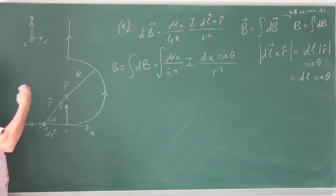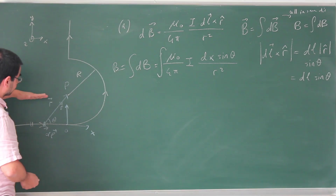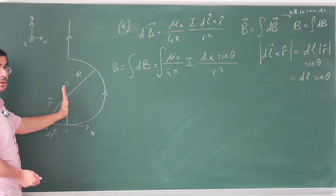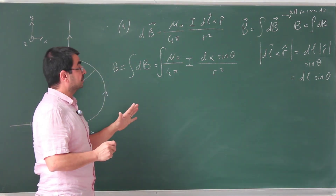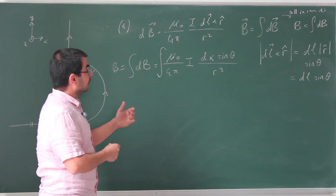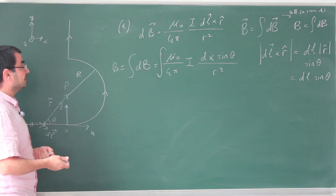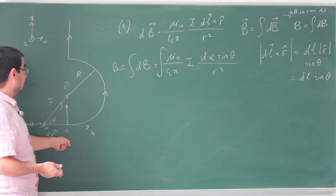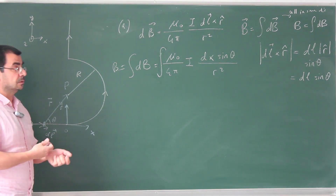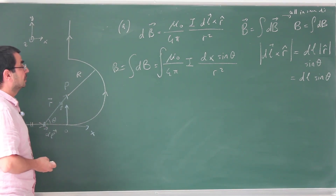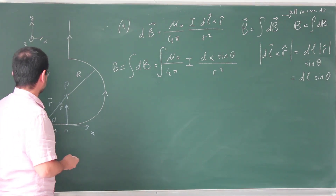There are two choices: either express everything in terms of theta — starting at theta equals 0 and going to theta equals pi over 2 — or express everything in terms of x. In the book, the theta approach was always used because the integral is easier to take. Expressing in terms of x is conceptually simpler but gives a more complicated integral. I'll choose x as the integration variable, though choosing theta would be more practical.